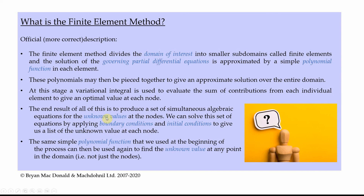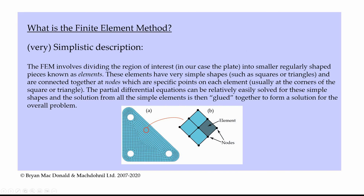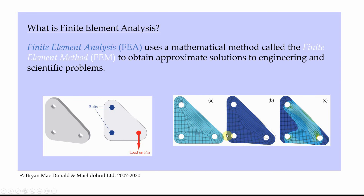What is the unknown value? In a stress analysis problem, that is the displacement or movement of each node. Going back to the previous slide, the first result in figure B was actually the displacement of the plate — the movement of every node in the plate is plotted there. The displacement of each node is the unknown value we're trying to find, and once we have that we can get our deformed shape, and then later we can get stress from that as well.